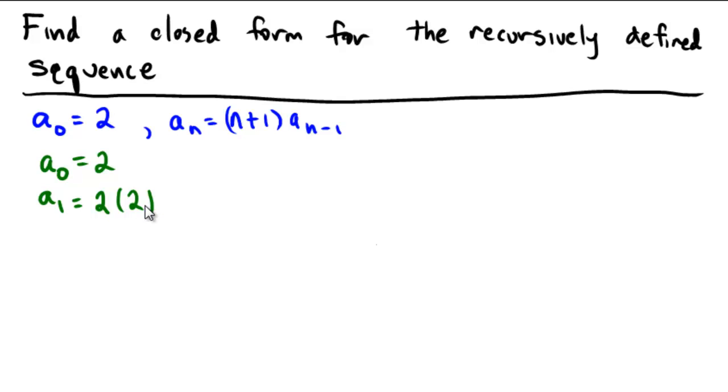So we're getting 2 times 2 here, also known as 4. What's a sub 2? a sub 2 would be 2 plus 1, inside of the parentheses, would be 3, multiplied by the previous term of the sequence, the a sub 1. So that would be 2 and 2. So we're probably looking at 12 here.